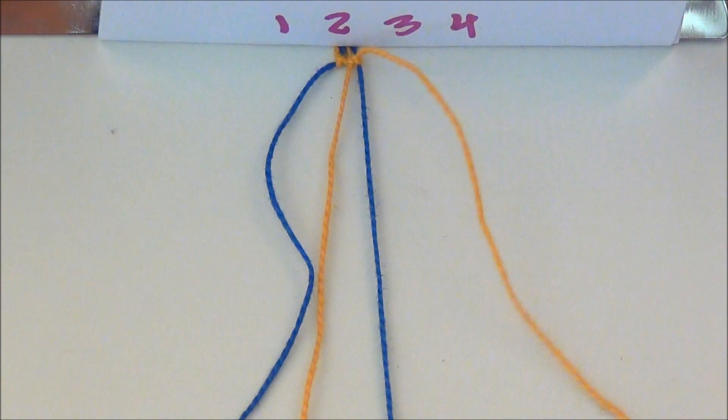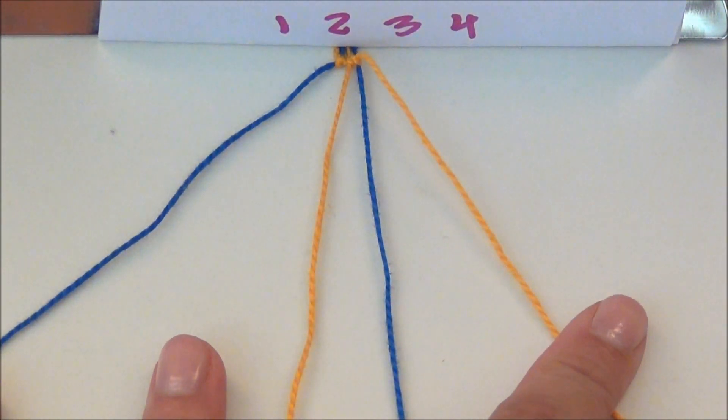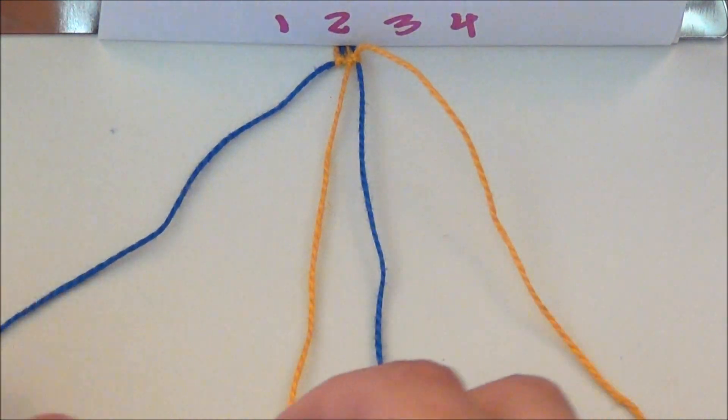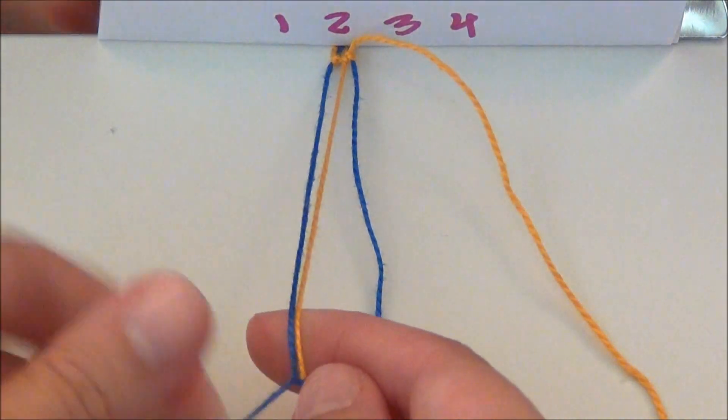Now our number one is number four. Once you've gone through all the strings in a row and your first string is now your last string, then you can start tying on with this string. So number one is going to tie onto number two, a forward knot.